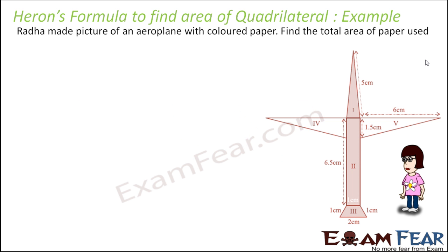Radha made a picture of an aeroplane with coloured paper. We need to find the total area of paper used — that means the total area of the aeroplane in two dimensions, because he made it from a piece of paper.